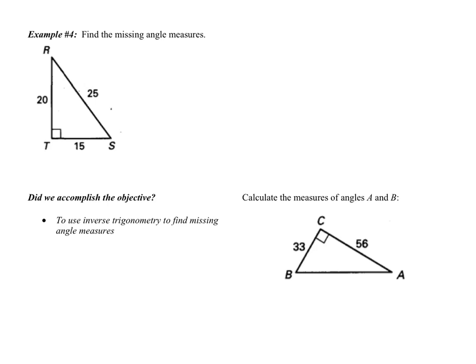Okay, one more. Example number four says find the missing angle measures — we have to find R and S. Let's start by finding angle R. This is different because I have all three sides: I have the side that's opposite of R, I have the hypotenuse, and I have the adjacent side. This means I can use any trig ratio that I want, so let's pick our favorite. I'm going to choose cosine.